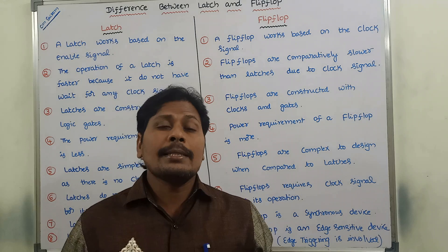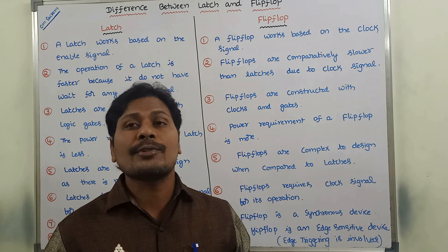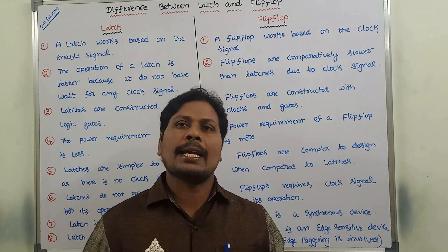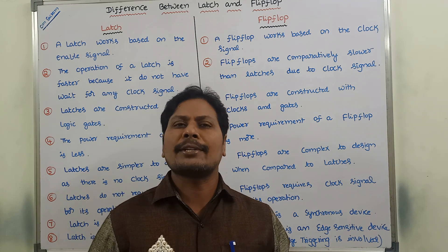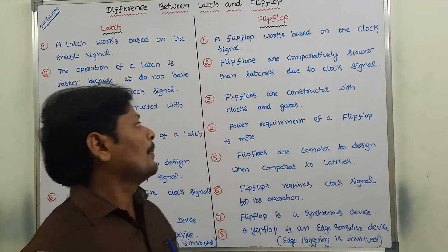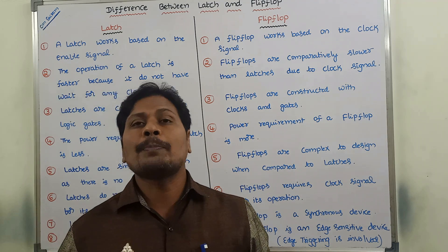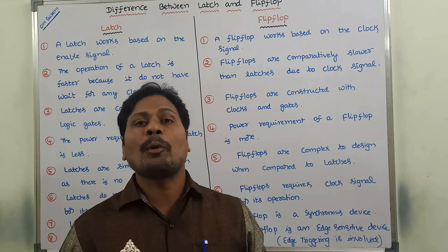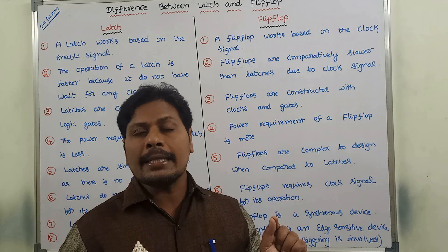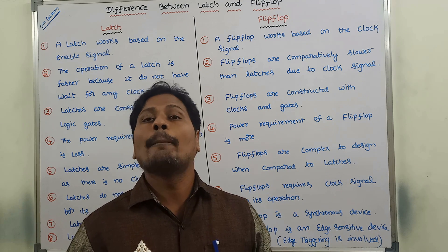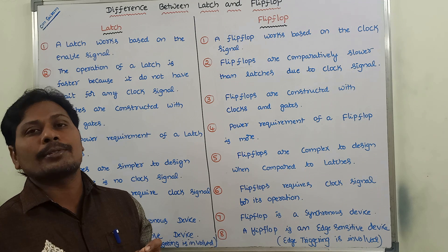Third point: latches are constructed with logic gates. The basic building blocks for constructing latches are logic gates such as AND gate, OR gate, NOT gate, NAND gate, and NOR gate. Whereas flip-flops are constructed with both clocks and logic gates. To construct flip-flops such as SR flip-flop, JK flip-flop, D flip-flop, and T flip-flop, both clock signals and logic gates are used.